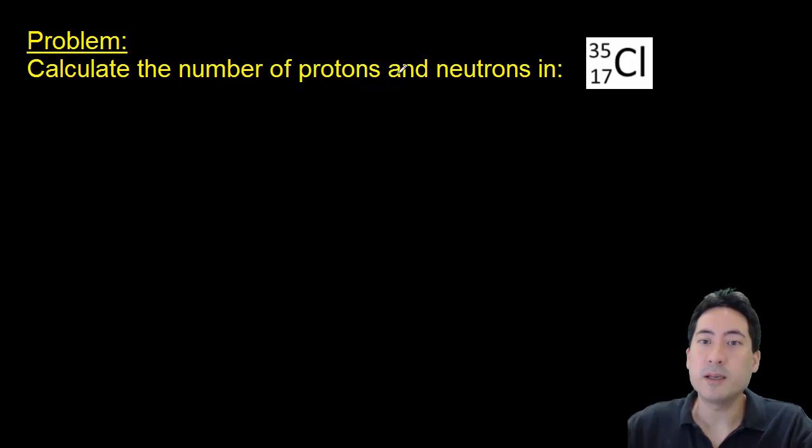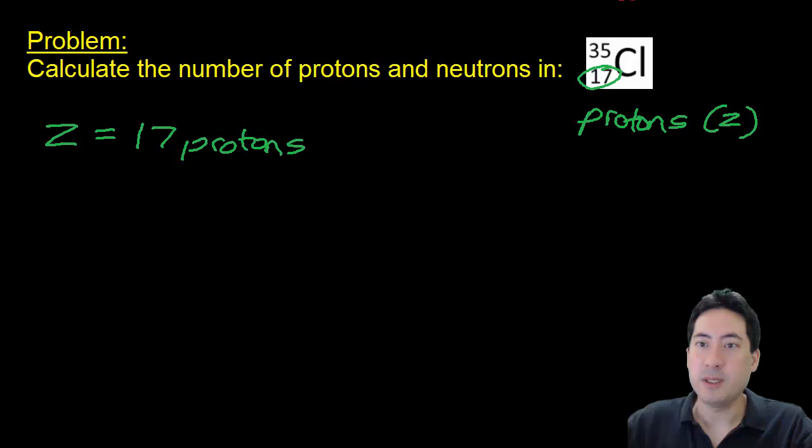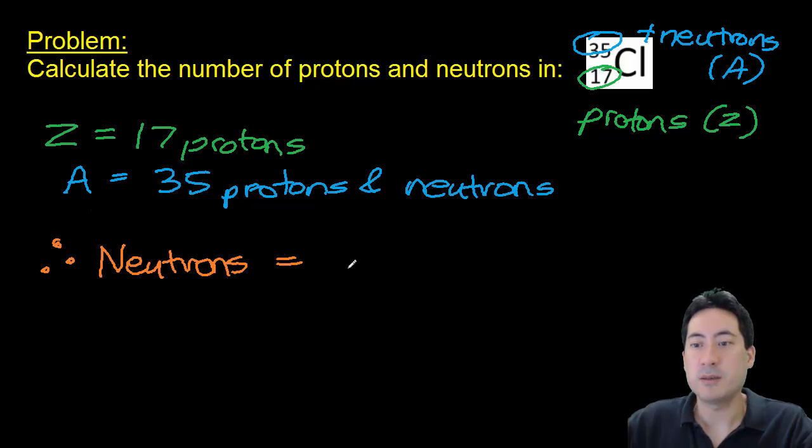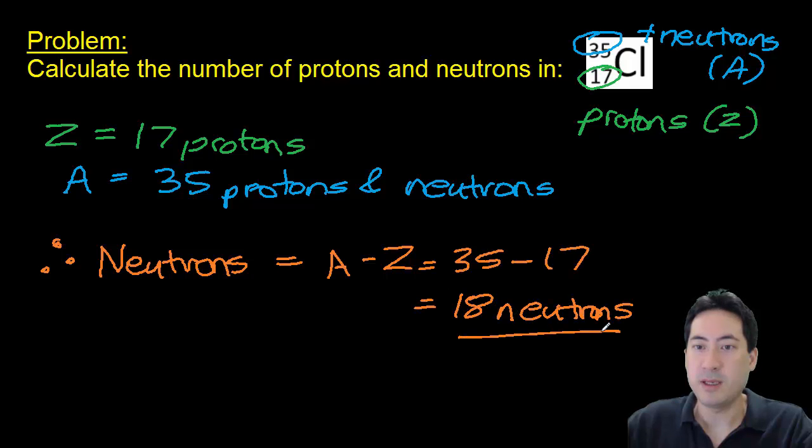Going to the first problem now. Calculate the number of neutrons and protons in chlorine. You have the symbol here. The smaller number must be the number of protons, so that must be 17. And the larger number must be the mass number, which is the number of protons plus neutrons. The mass number is 35. So the number of neutrons is the mass number minus the atomic number, which is 35 minus 17, and that gives you 18 neutrons.